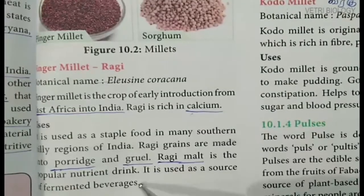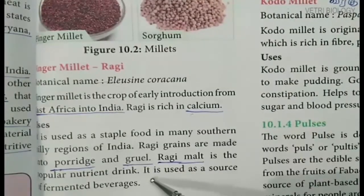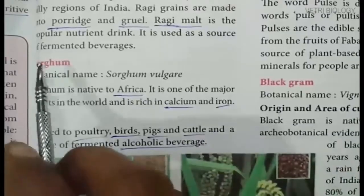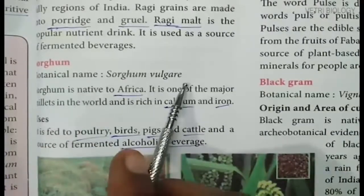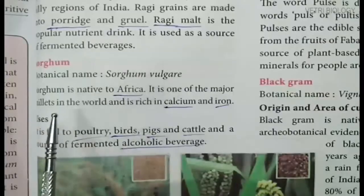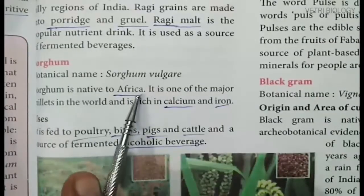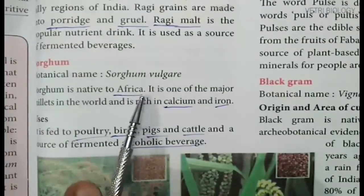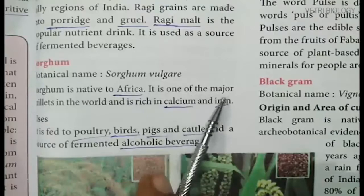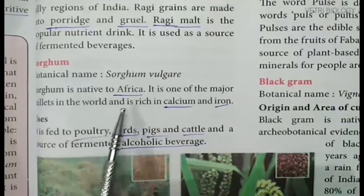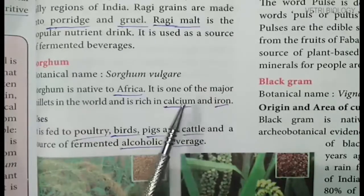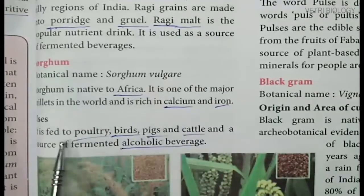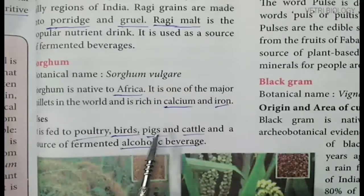Next one is sorghum. Its botanical name is Sorghum vulgare. Sorghum, known as solam in Tamil, is native to Africa. It is one of the major millets in the world and is rich in calcium and iron. It is fed to poultry, birds, pigs and cattle.